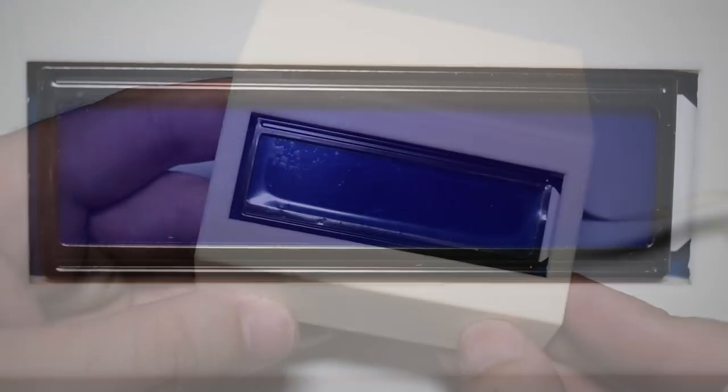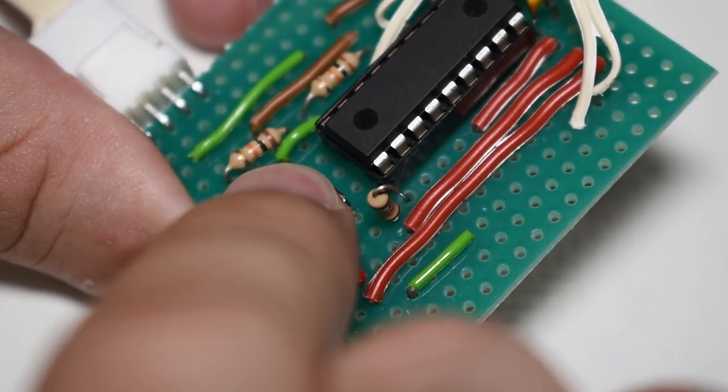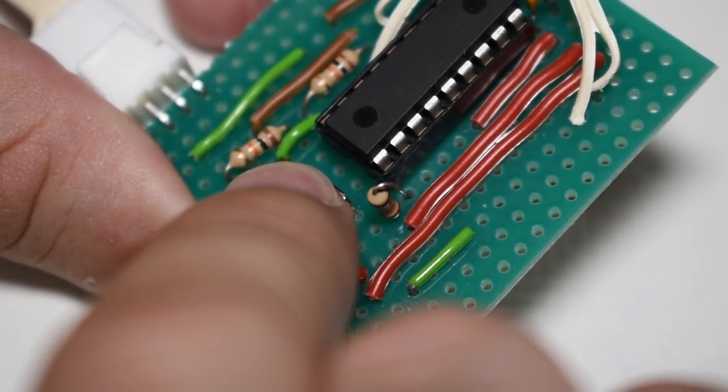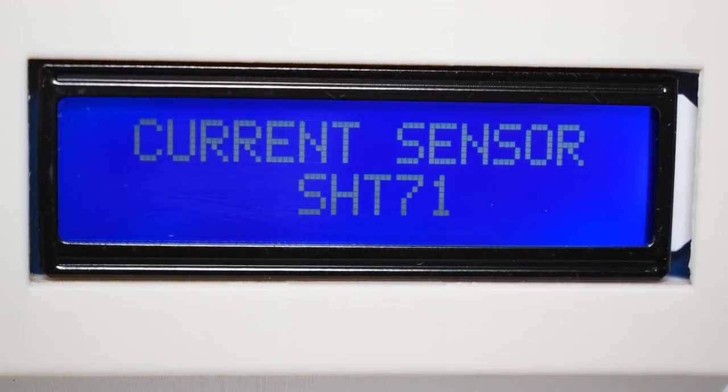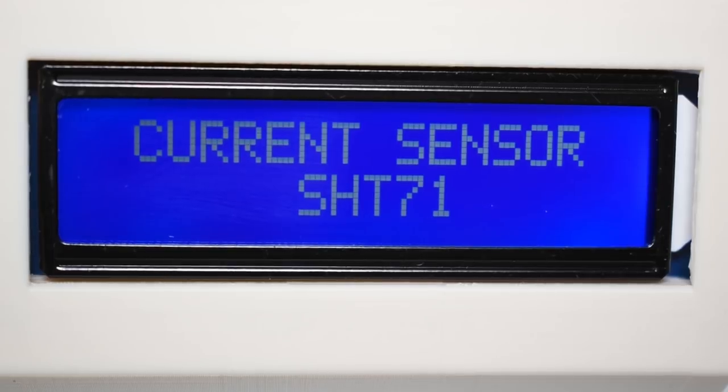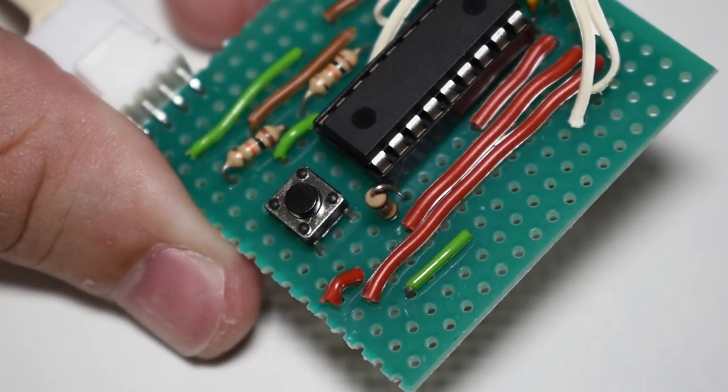Before turning the power on for the first time, you need to define which sensor you are using. To enter the setup menu, keep the small button pressed while turning the power on. The display will light up and enter the setup menu. At this point, you can release the button.